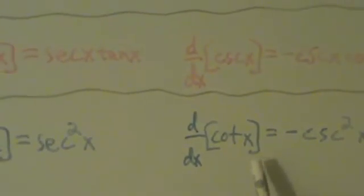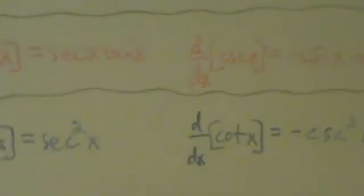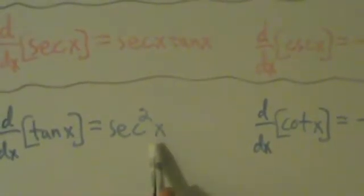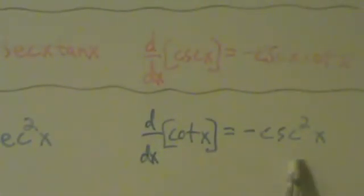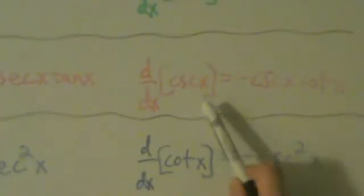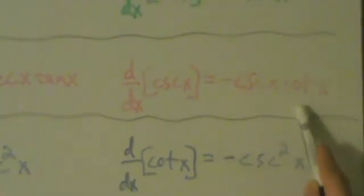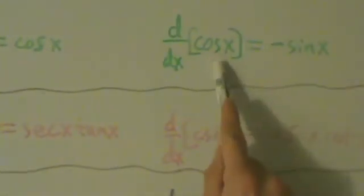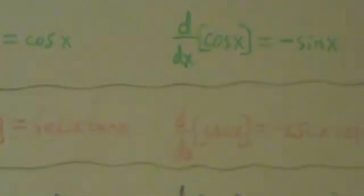So we see there's this pretty strong analogy between trig function and its cofunction. So tangent, secant squared, cotangent, negative cosecant squared. Secant, secant tangent, and then cosecant, negative cosecant cotangent. Sine of x, cosine of x, cosine of x, negative sine of x, right? So there's a pretty strong analogy there between those.